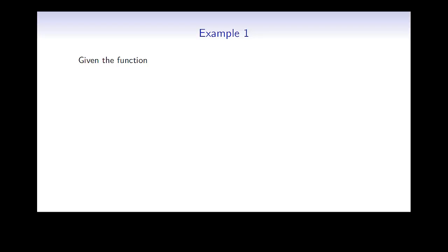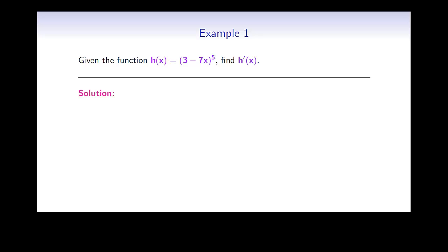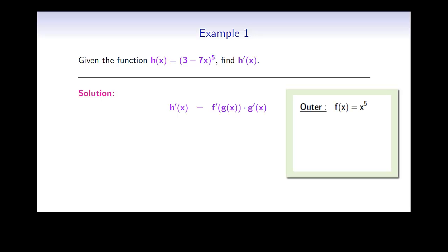Here's the first example. Given the function h of x is 3 minus 7x to the fifth power, find h prime of x. The chain rule tells us that h prime of x is f prime of g of x times g prime of x, where f is the outermost function and g is the innermost function. In our particular example, the outermost function is x to the power of 5, and the innermost function is 3 minus 7x.